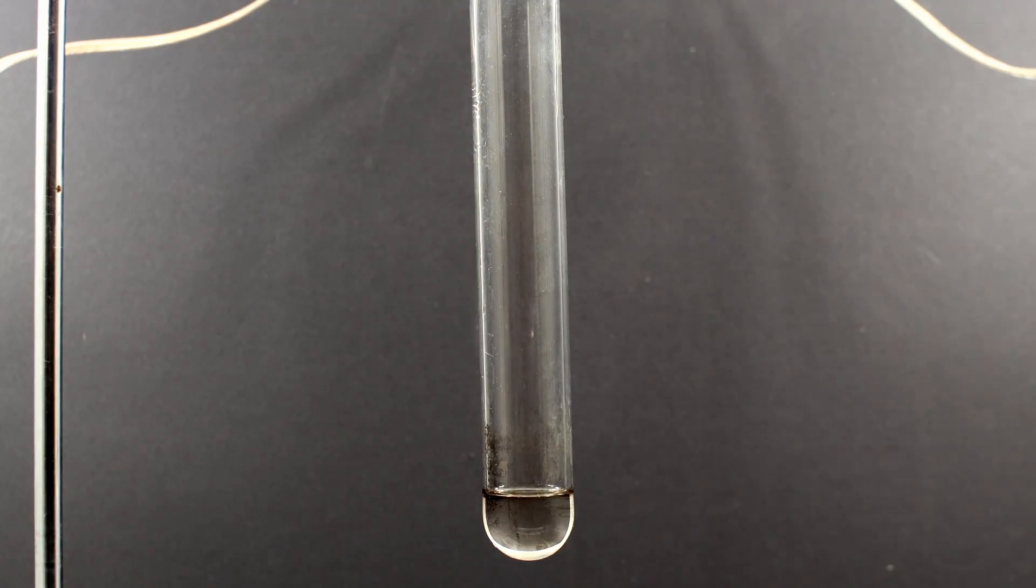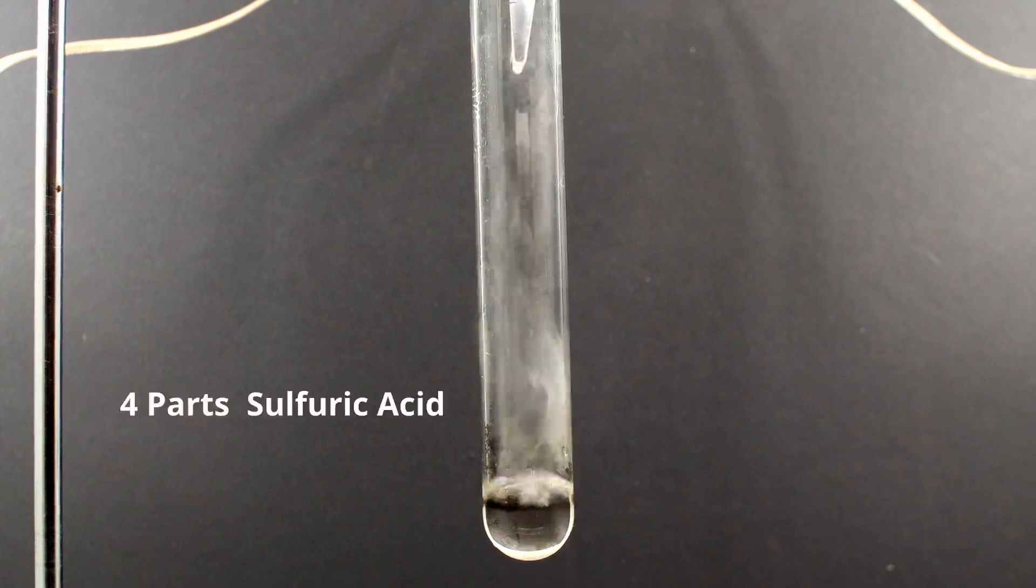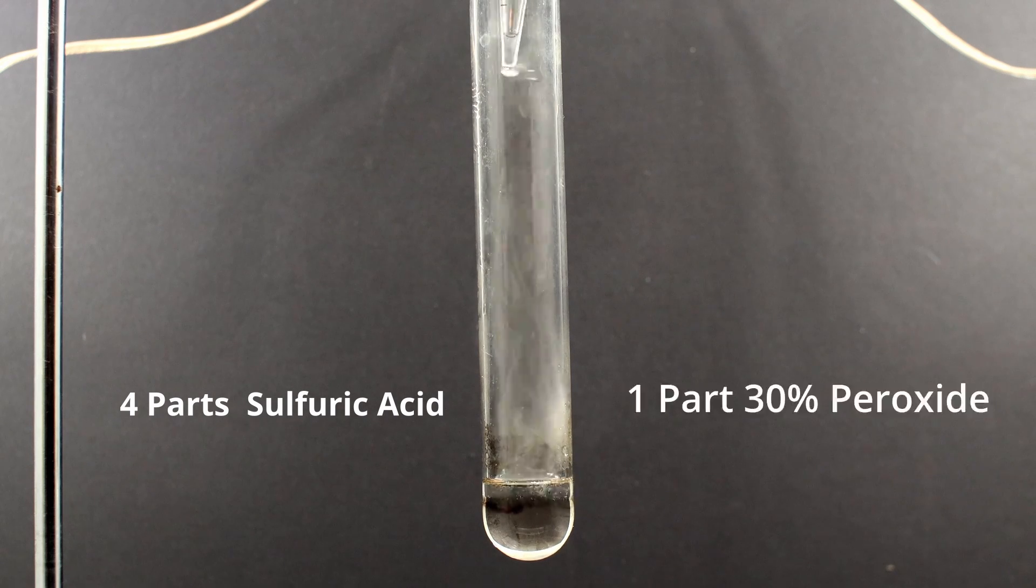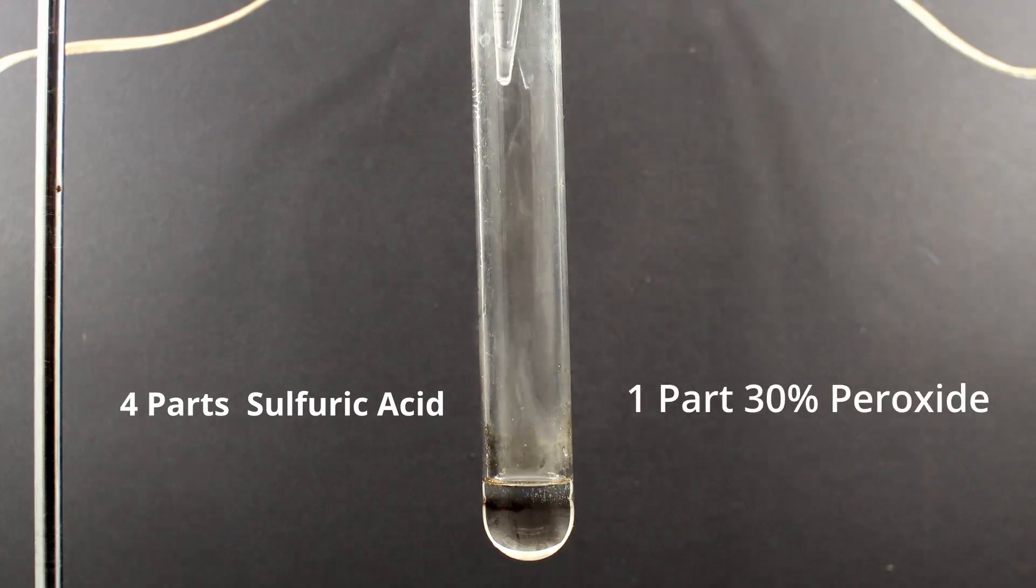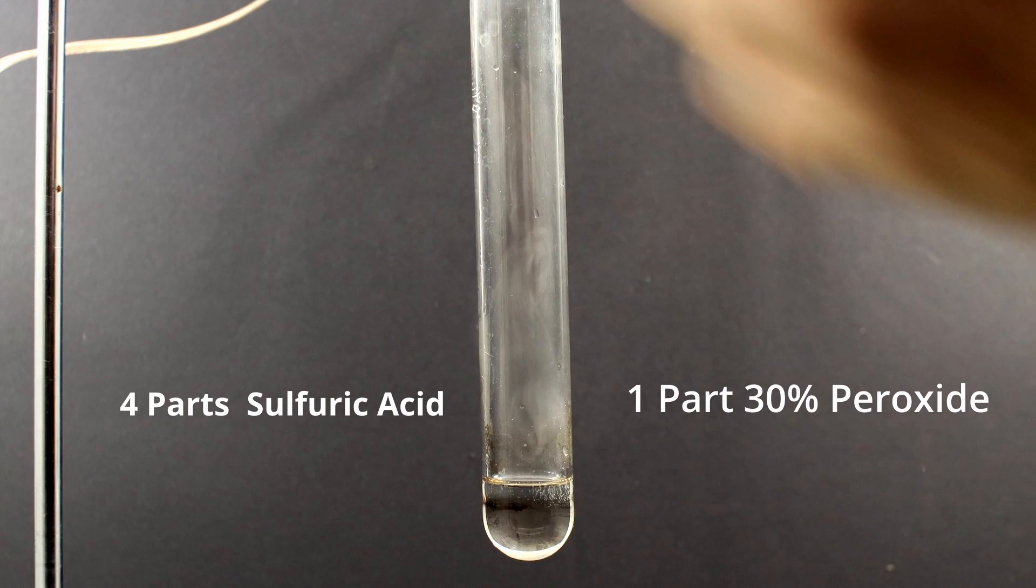But if we start out with a solution of about 30% hydrogen peroxide, we can go ahead and add it to the sulfuric acid in a ratio of about 4 parts sulfuric acid to 1 part hydrogen peroxide. Do not go too crazy with the hydrogen peroxide, because it could literally blow up if you add too much.